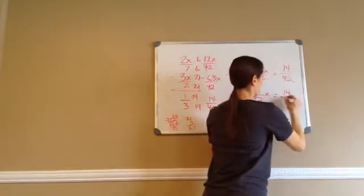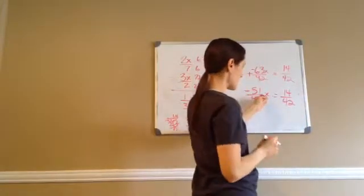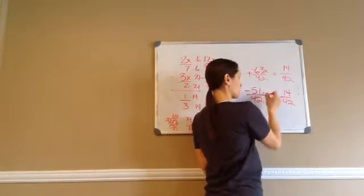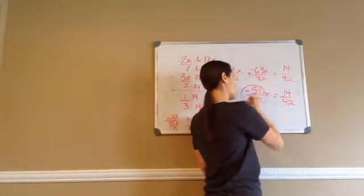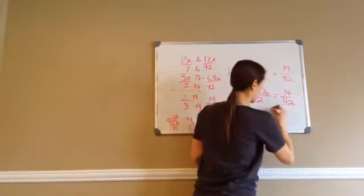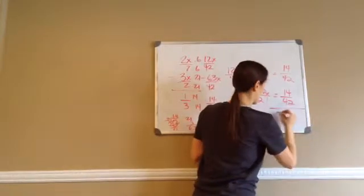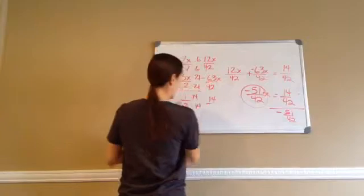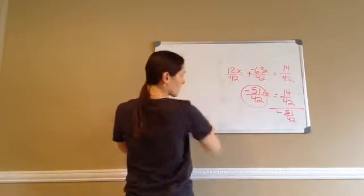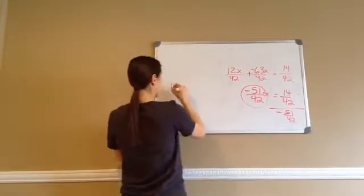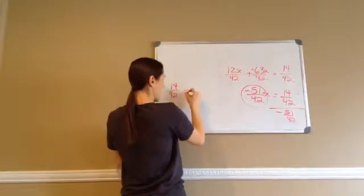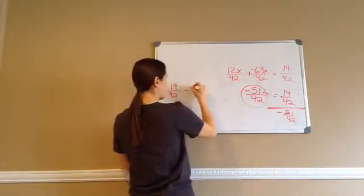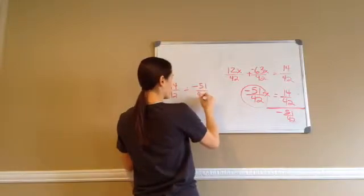Equals 14 over 42. And again, since this is a fraction times x, we're trying to get x by itself. So this times becomes divided by it. I know that looks weird, so that's why we rewrite it: 14 over 42 divided by negative 51 over 42.